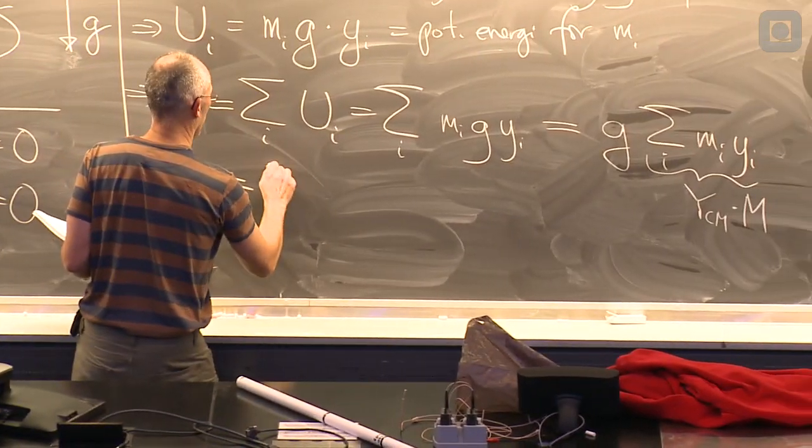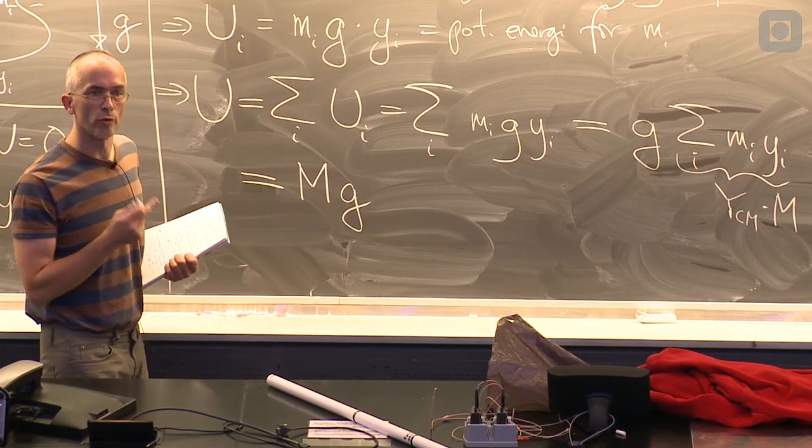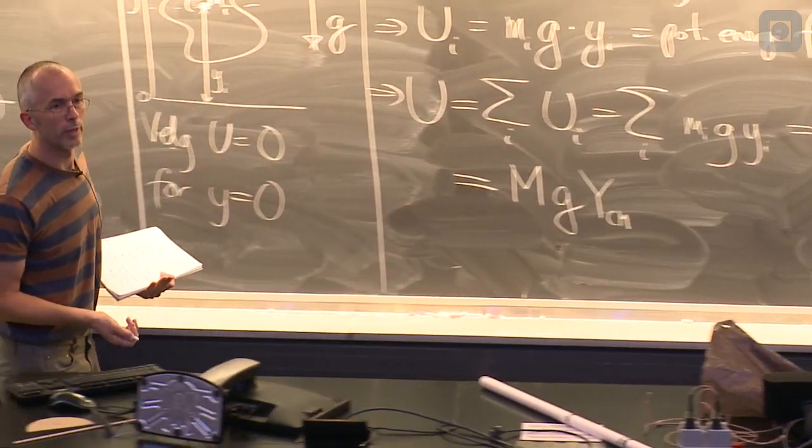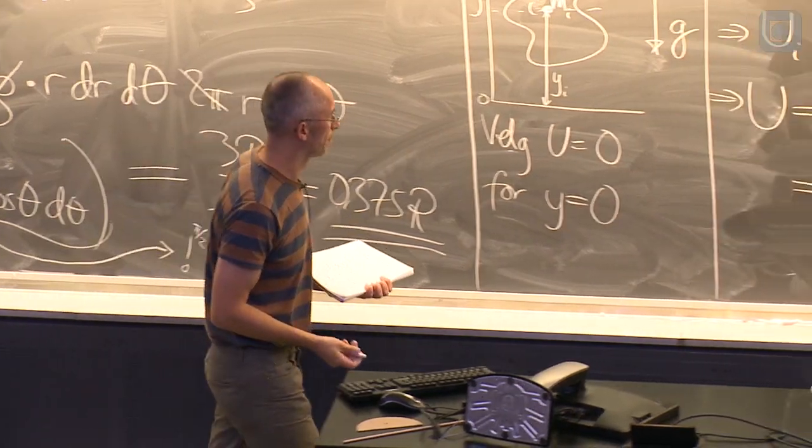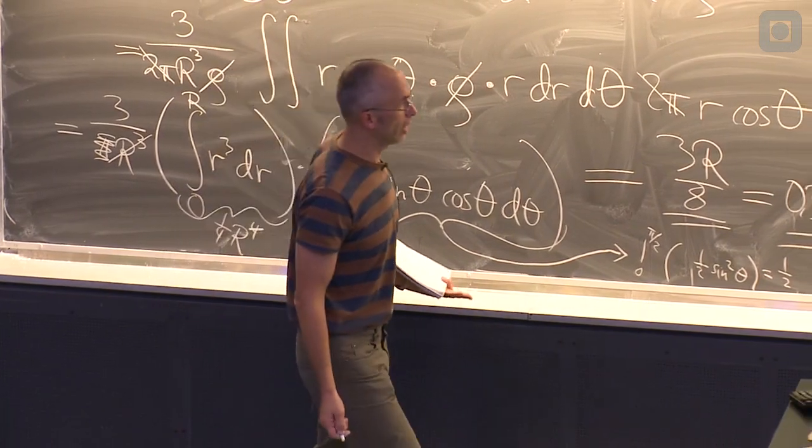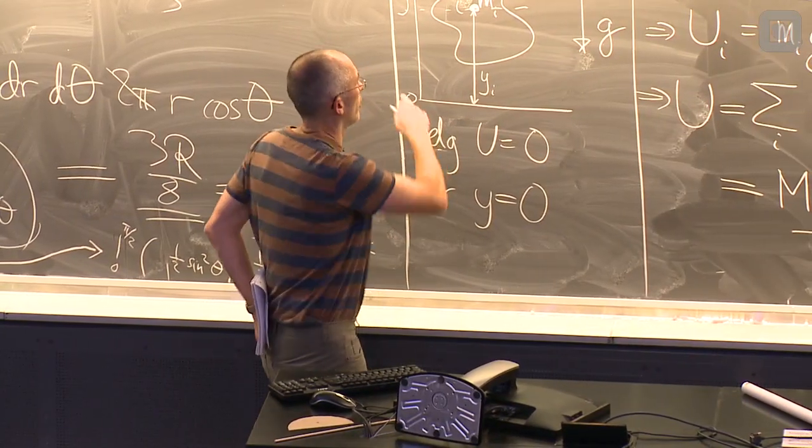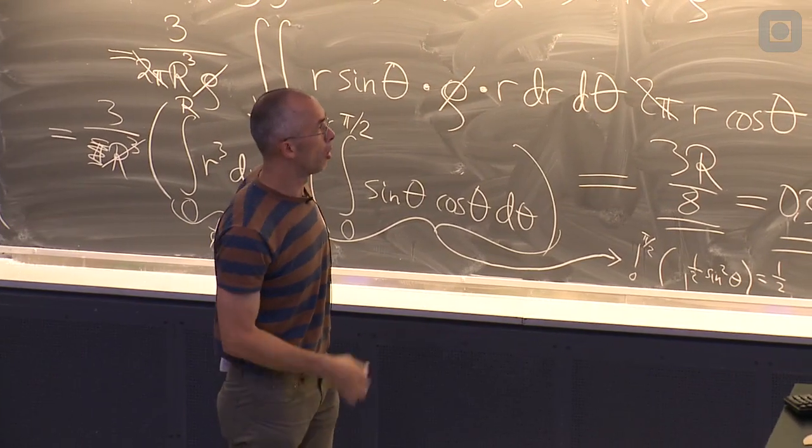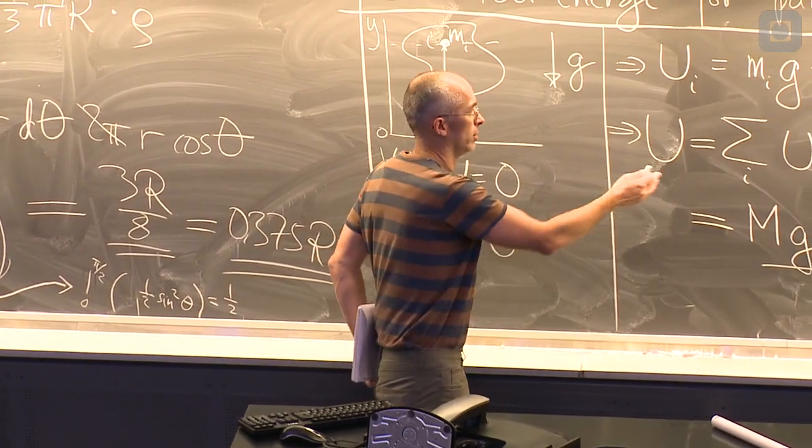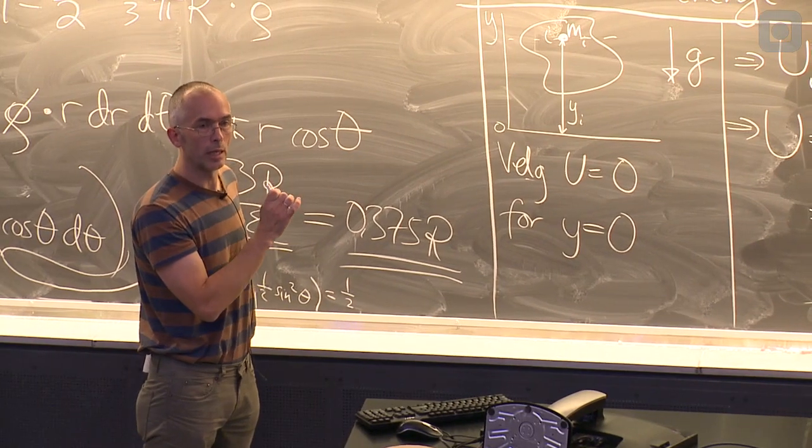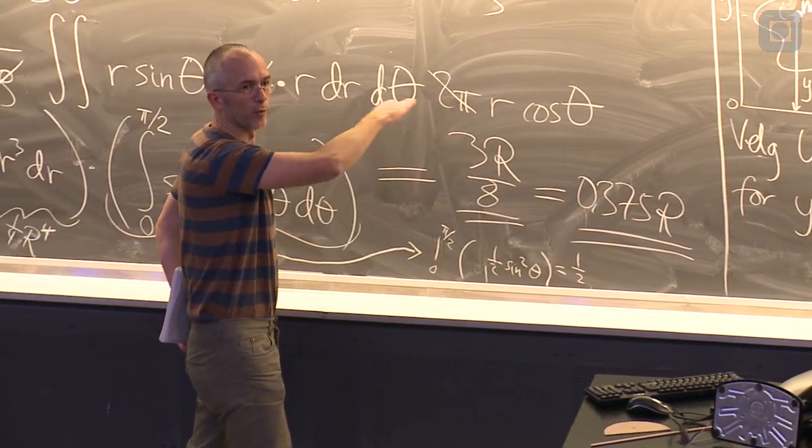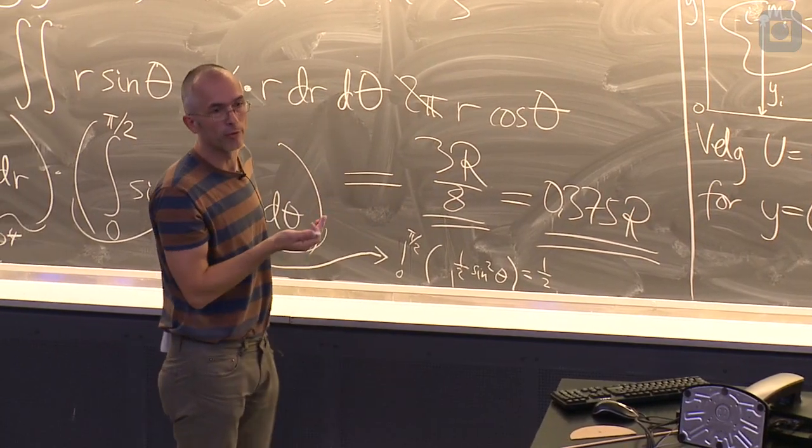Så da ser vi at den totale potensielle energien blir totalmassen gange tyngdenakselerasjon, gange høyden til massesentret. Det er jo kjekt fordi at det betyr at et sånn system med masser litt både her og der, det har samme potensiell energi i tyngdefeltet som om hele massen var samlet i ett eneste punkt, nemlig i massesentret. Eller for så vidt i hvilken som helst x- og z-posisjon. Bare i høyden til massesentret, men la oss si i massesentret.